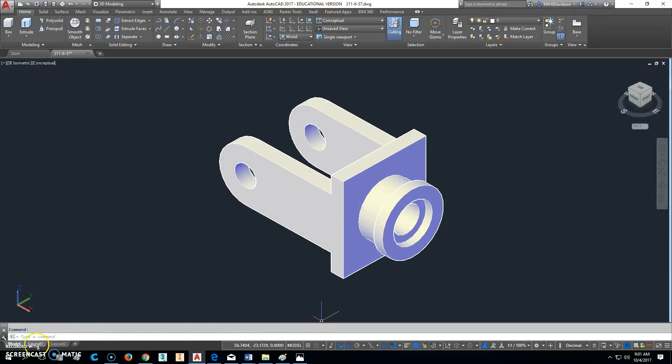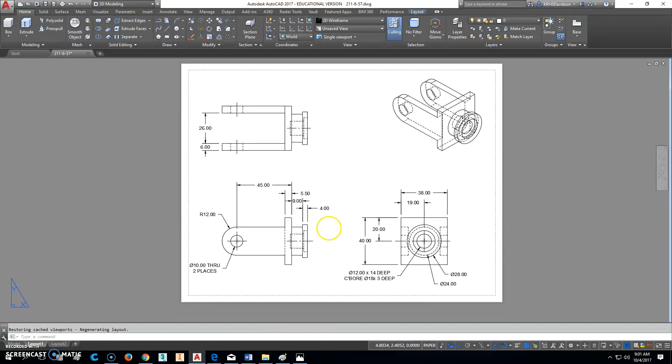So when you go to make your layout drawing, this is what it should look like. If you're really smart, you're looking at this right now, because this is all the dimensions that you need, which aren't given to you in Blackboard.